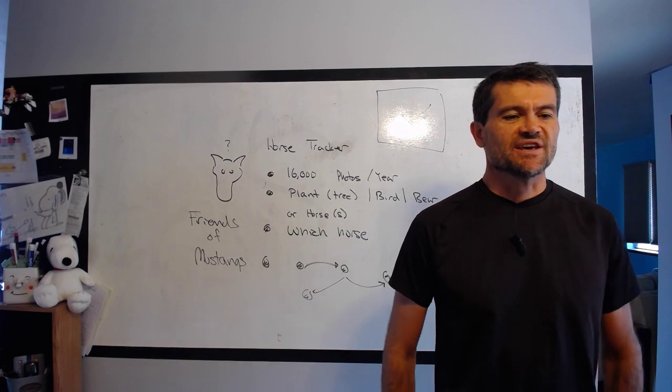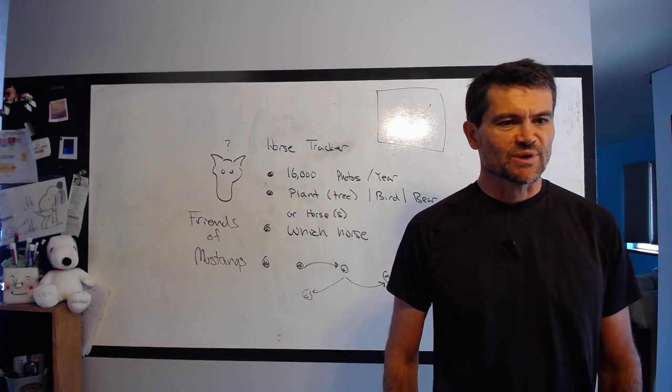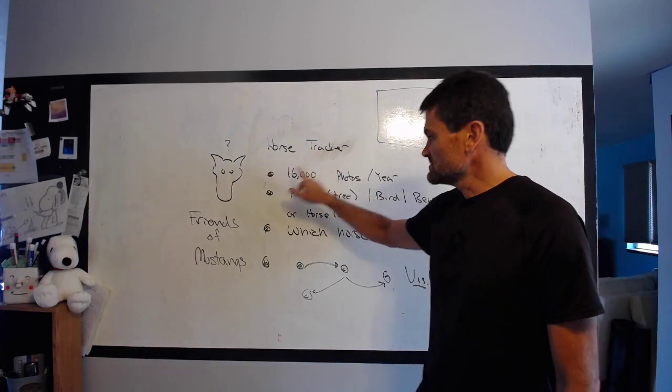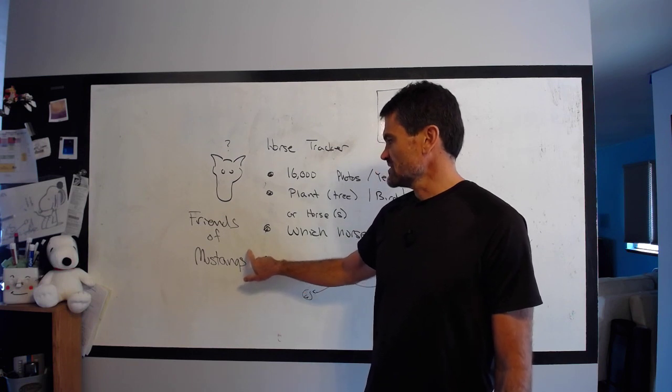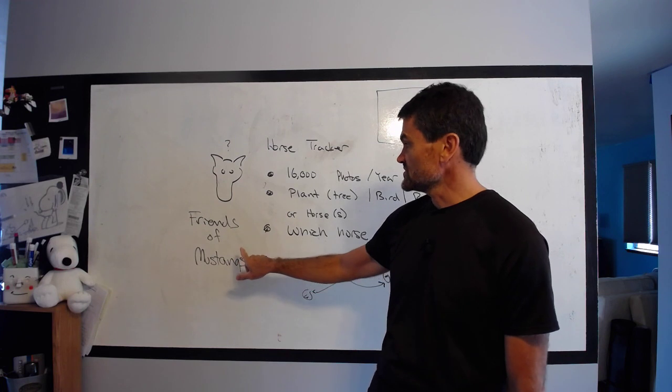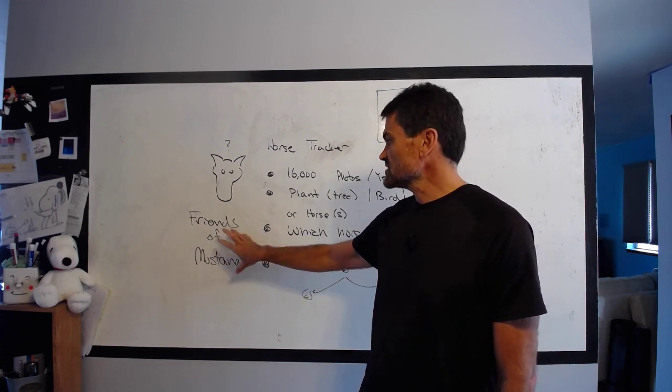Hi, so this is a horse project that is software related. I'm calling it the Horse Tracker, and this is associated with a group called Friends of the Mustangs, whose job is to keep track of about 150 horses that are in the Little Book Cliffs area just north of town. So the basic question is, which horse is it?